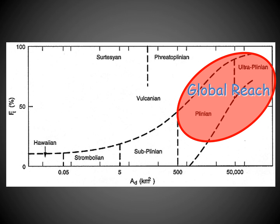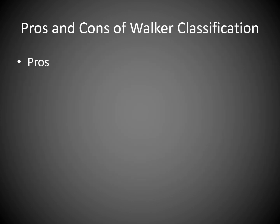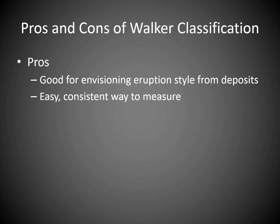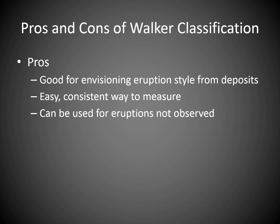The pros and cons of Walker's classification: obviously, it's good for envisioning what an eruption looked like when you didn't actually observe it. It's an easy, repeatable, consistent, straightforward way to measure. Walker tried several variations and felt this one gave the most repeatable results. The big advantage is it can be used for eruptions where we couldn't observe — either active ones that were too remote, at night, wrong season, bad weather, or older ones where there were no observations at all.